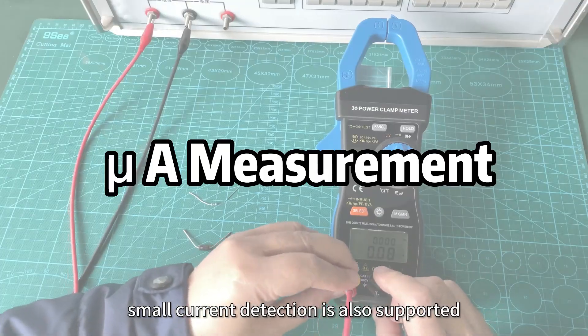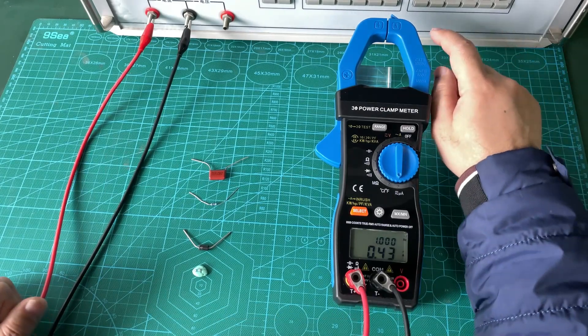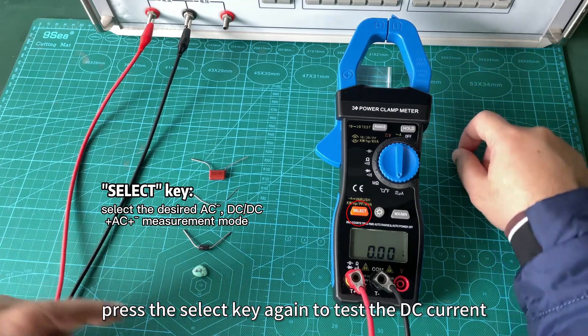Small current detection is also supported. It can measure the current of 0 to 1000. Press the select key again to test the DC current.